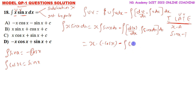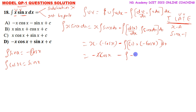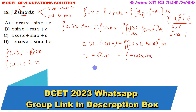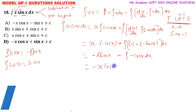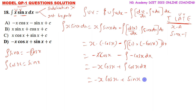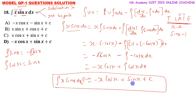So that gives minus x cos x, minus integration of 1 times minus cos x dx. Minus into minus gives plus, so we get minus x cos x plus integration of cos x dx. Integration of cos x is sin x. Therefore the answer is minus x cos x plus sin x plus C. So integration of x sin x dx equals minus x cos x plus sin x plus C.